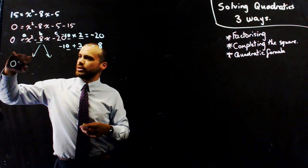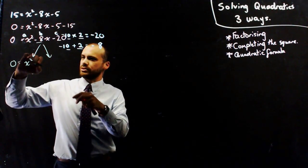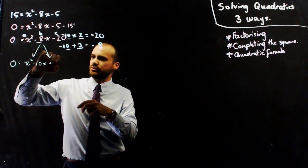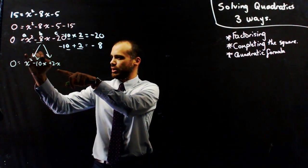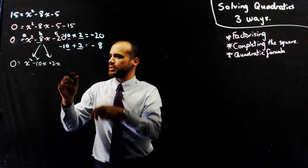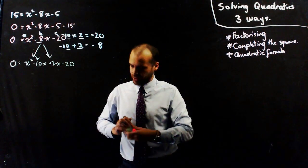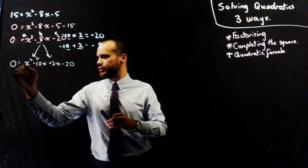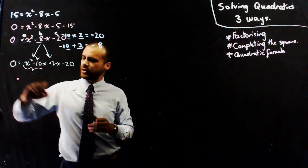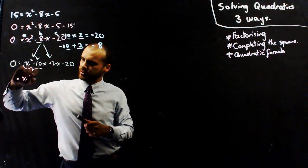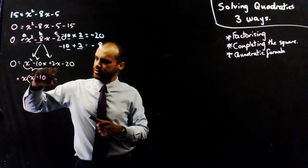Now it's going to be 0 equals x squared, decomposing, so the negative 8x becomes negative 10x plus positive 2x, and then negative 20. Now I group my first two terms and I find a common factor. The common factor for x squared and negative 10x is simply x, and x times x will make x squared, and x times negative 10 will make negative 10x.